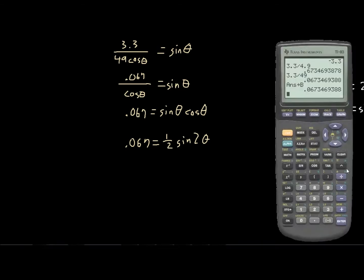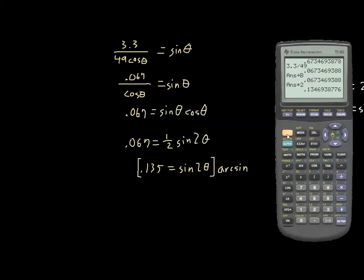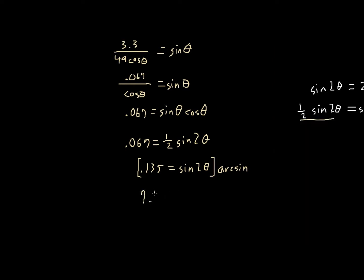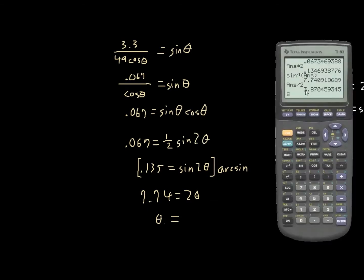Now if we multiply both sides by 2 to get rid of the one-half, we get 0.134 — I'll round to 0.135 — is equal to sine 2 theta. Now let's get rid of the sine by taking the arc sine of both sides. Arc sine of 0.135 is 7.74 degrees. So 7.74 equals 2 theta, and dividing by 2 gives theta equal to 3.87 degrees.